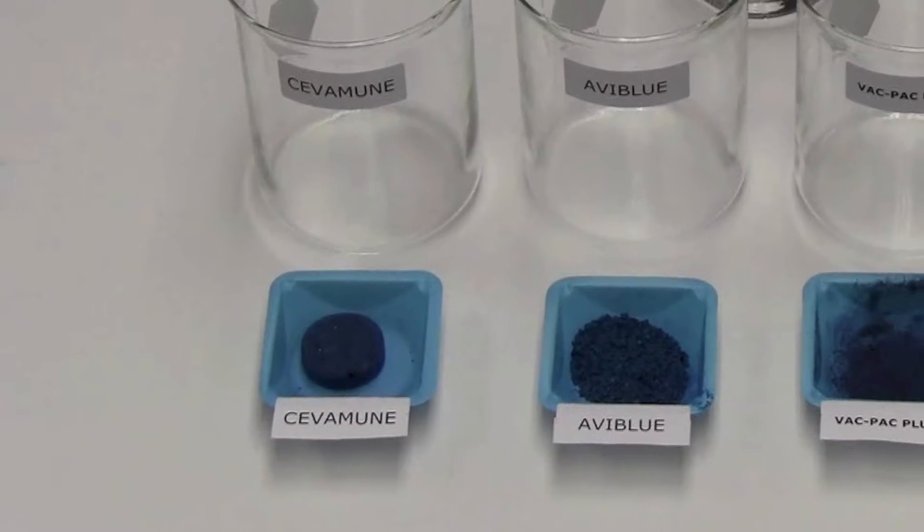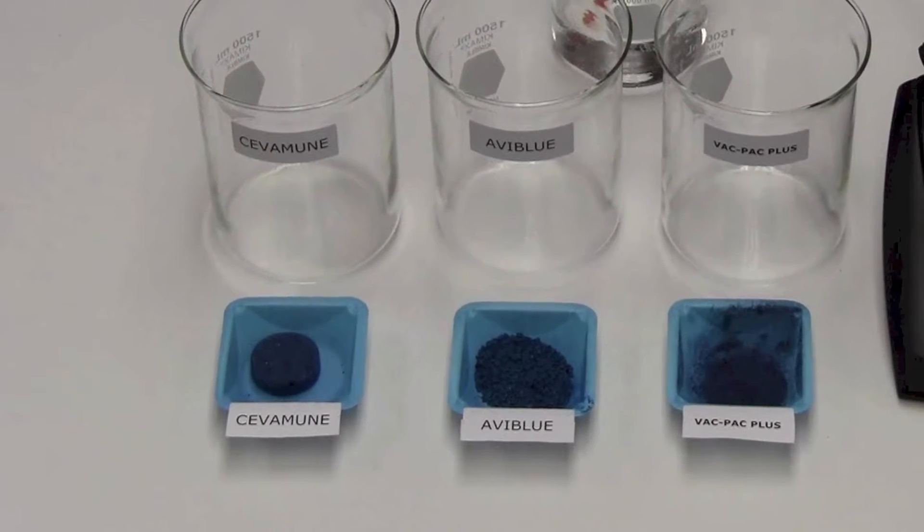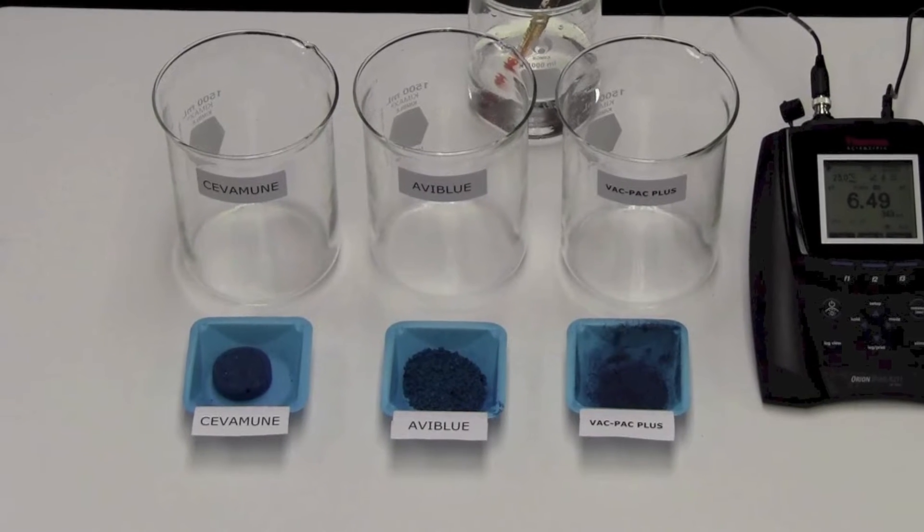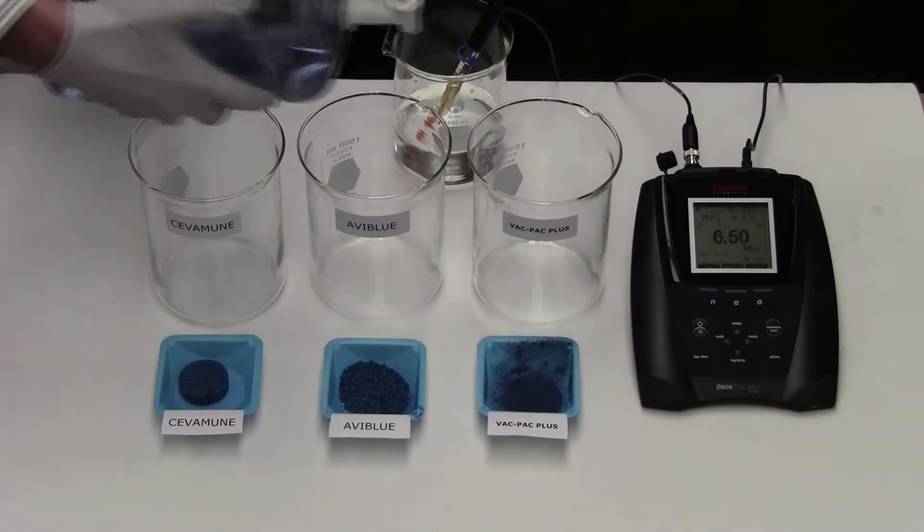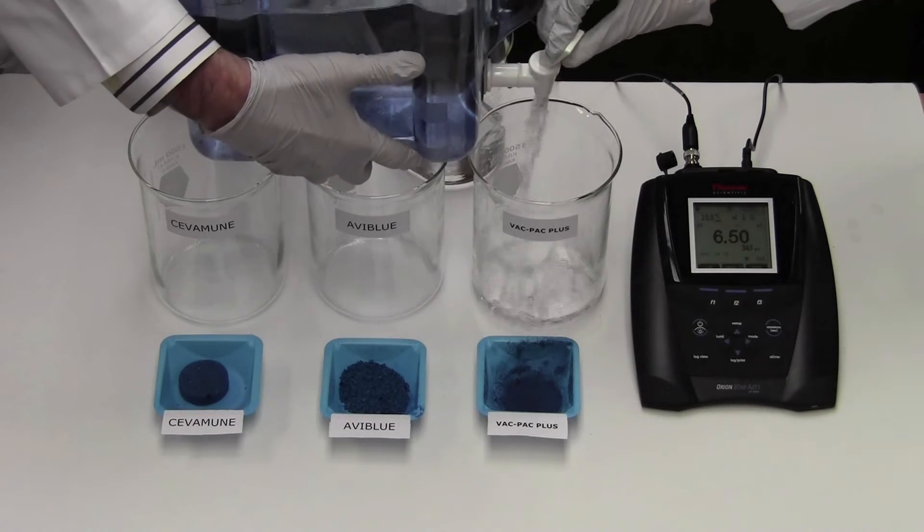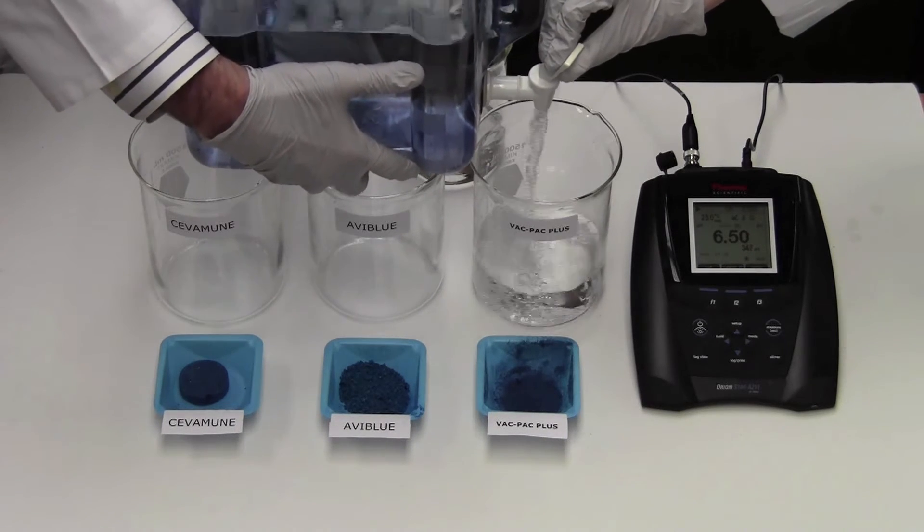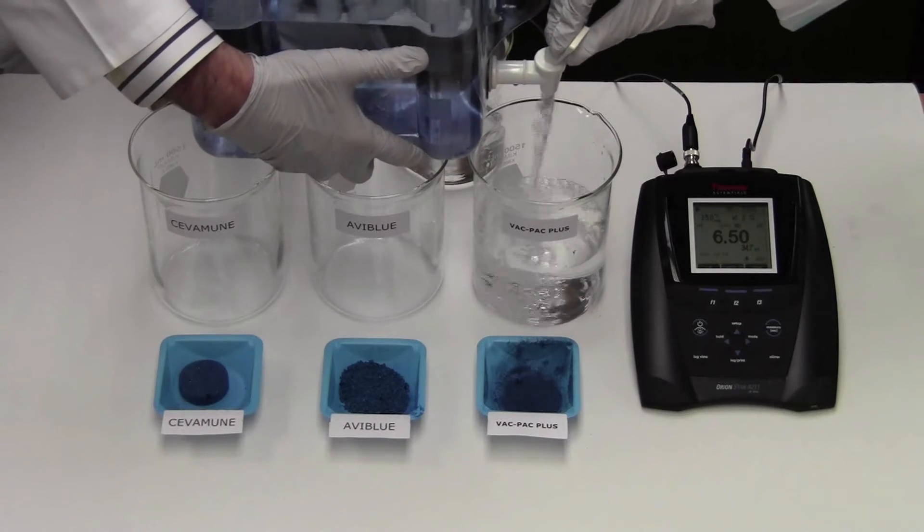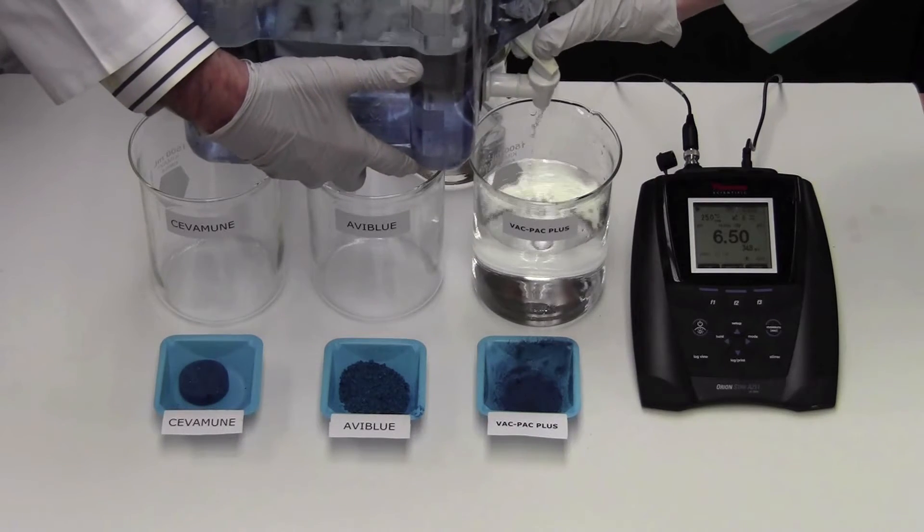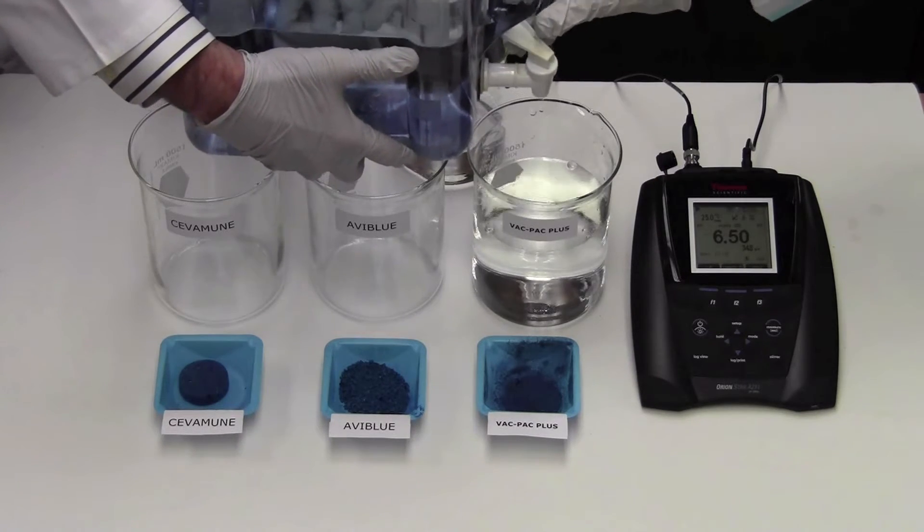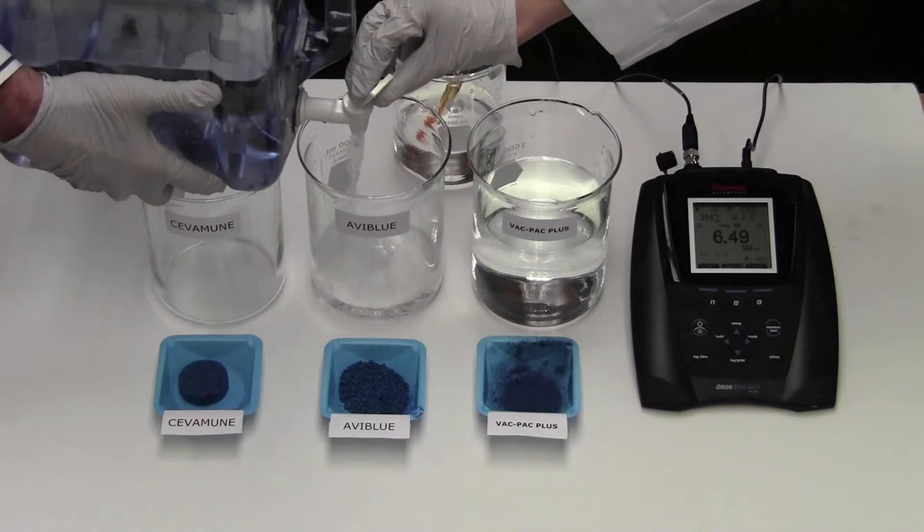Each of these drinking water stabilizers is normally premixed in a stock solution concentrate to rehydrate and stabilize the vaccine in an ideal environment before adding the vaccine concentrate to the drinking water. Let's make our stock solutions and measure the pH for all three products. First, we have three beakers pre-measured with one liter from the same water source with a slightly acidic pH. We'll be adding proportionate amounts of each product as you would to a stock solution concentrate.